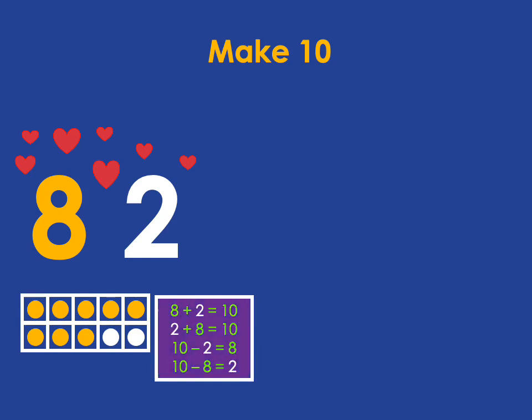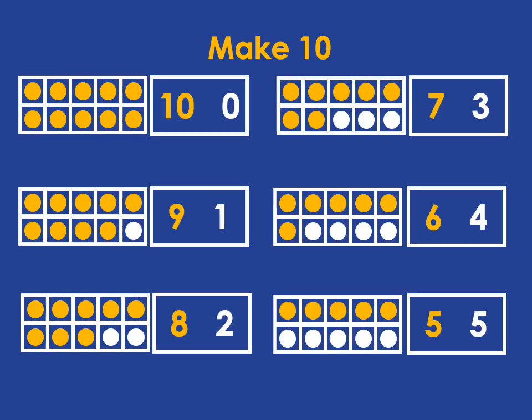So just knowing that 8 and 2 are the pair lets us get all those other facts. This means that all you have to learn is this set of facts here, and once you know these facts, you know all those addition and subtraction calculations.